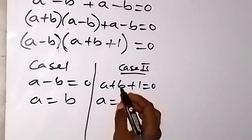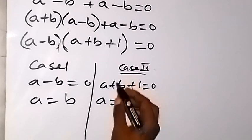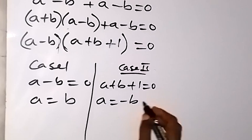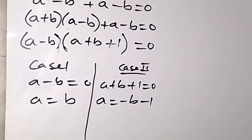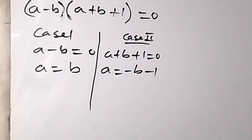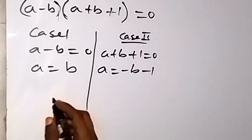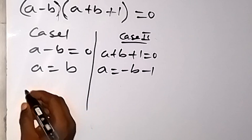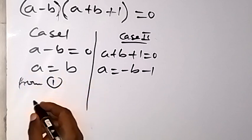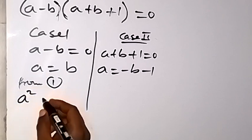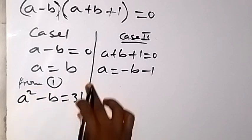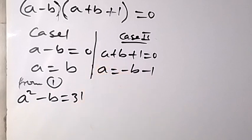From case 2, solving gives a equals minus b minus 1. Now let's go back to equation 1 and solve using each case.